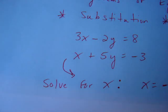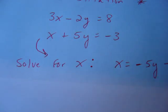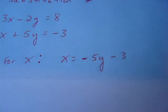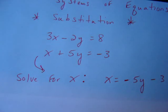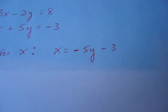To get x by itself, as you can see, we need to subtract 5y, which is going to give us a negative 5y on the other side. So if you solve this for x, you get x equals negative 5y minus 3.